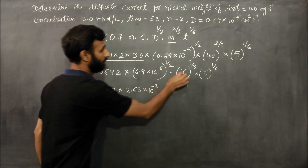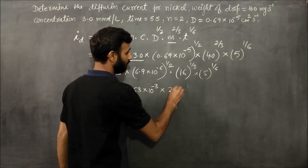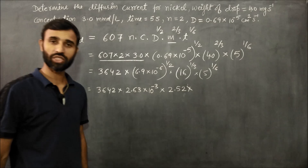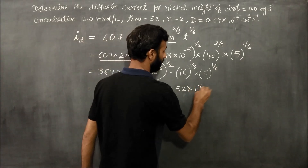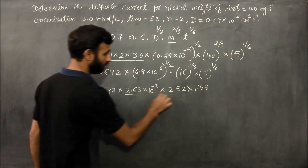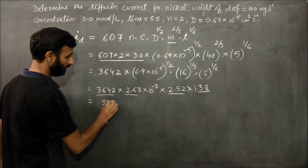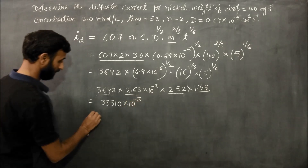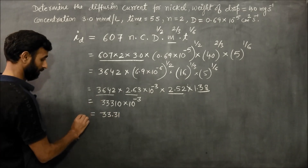The intermediate values work out as: 16 raised to power 1/3 gives approximately 2.52, and 5 raised to power 1/6 gives approximately 1.38. On solving all these, the value comes out to be 33310 times 10 raised to power minus 3, which equals 33.31.